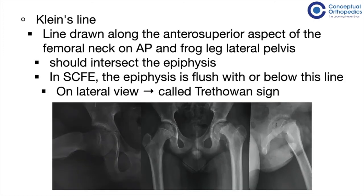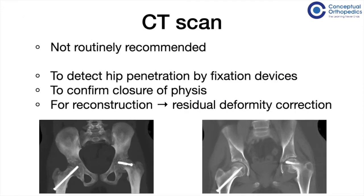One of the most common lines drawn in SCFE is Klein's line — a line drawn along the anterior superior aspect of the femoral neck on the AP and lateral pelvis radiographs. On the normal side, this line should intersect the epiphysis, whereas in slipped capital femoral epiphysis, the line does not cross the epiphysis. On the lateral view, this finding is also known as the Trethovan sign.